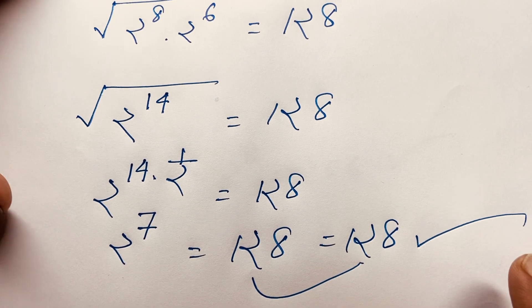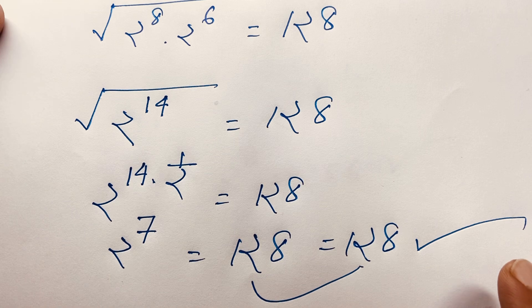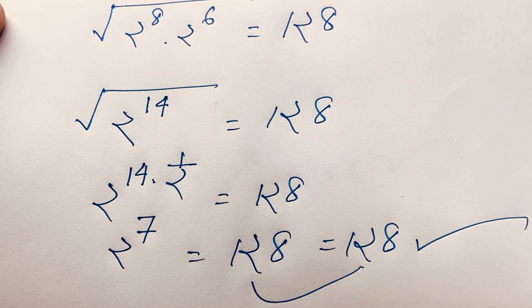So our final answer is k equals 256 in this Math Olympiad question. Thank you all — if you enjoyed this video please subscribe to my channel for other interesting videos. Goodbye, take care.